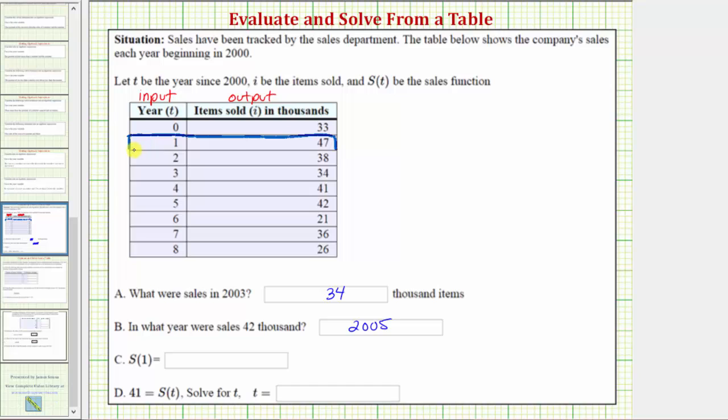And notice how when t equals one, the output or function value, which gives the items sold in thousands, is equal to forty-seven, and therefore s of one equals forty-seven.